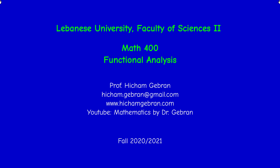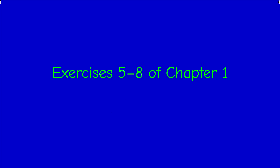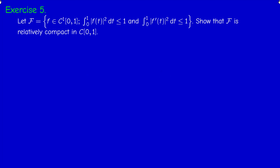Welcome back. In this video I'm going to solve exercises 5 to 8 of chapter 1. Exercise 5: we consider the collection of all continuously differentiable functions on [0,1] such that the integral of the square of f and the integral of the square of the derivative of f are both less or equal than 1. We have to show that this collection is relatively compact in the space of continuous functions from [0,1] to ℝ.